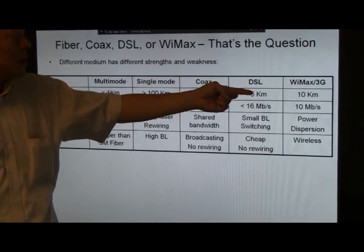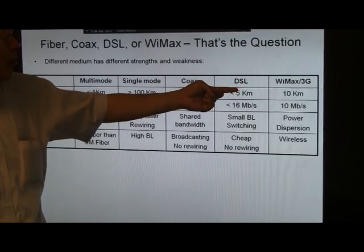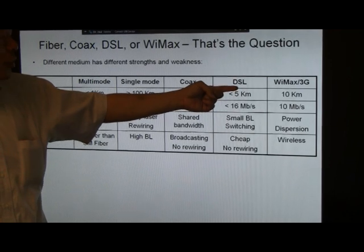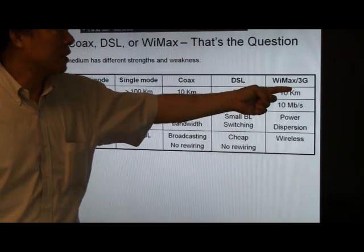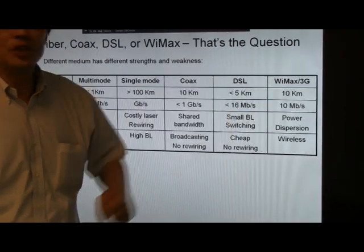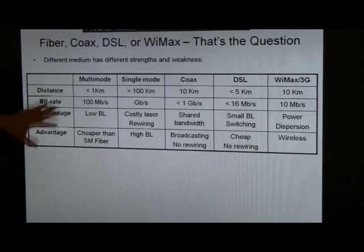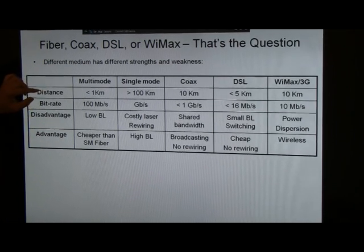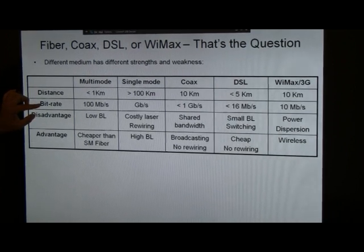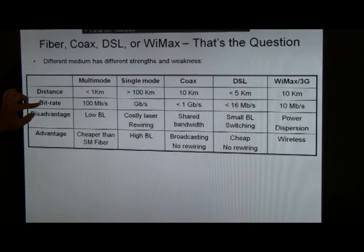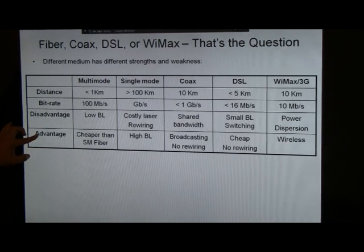Digital subscriber loop. WiMAX is 4G as well as 3G wireless communication. On this axis, we look at the distance that these technologies can do and the bit rate they can do respectively for the different technology. The disadvantage of the technology as well as the advantage of the technology.